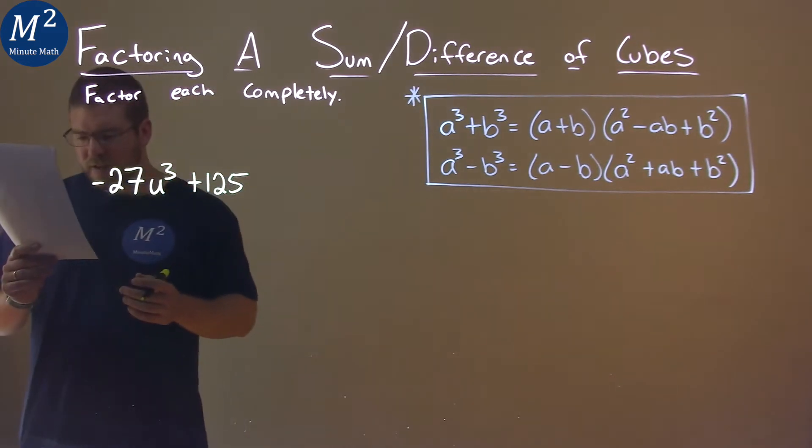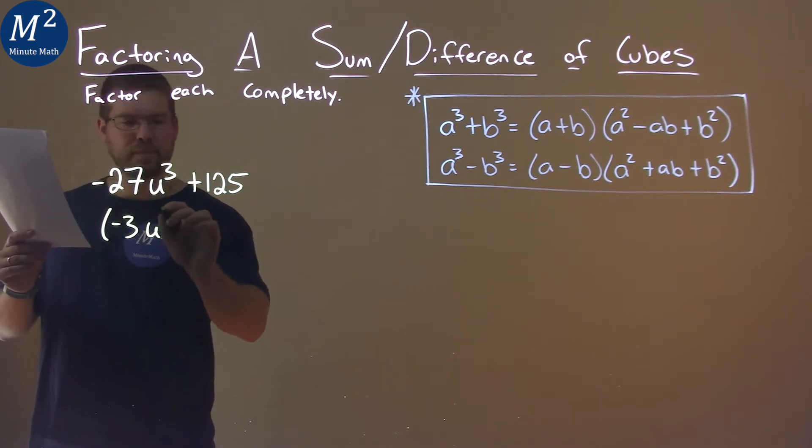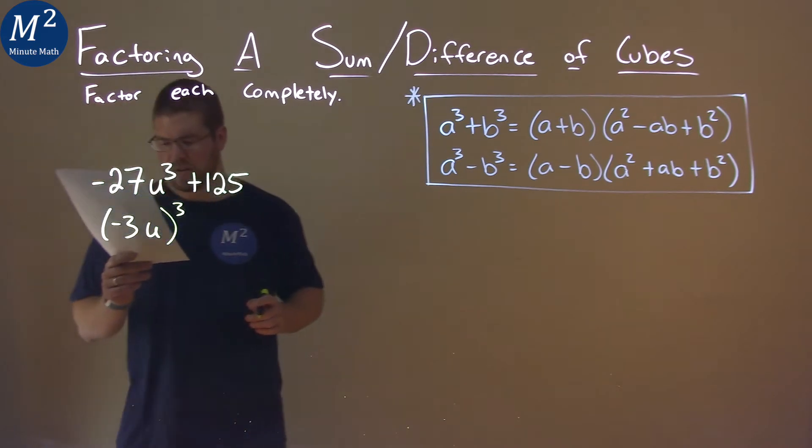Negative 27u cubed, well negative 3 cubed is negative 27, and then u cubed is u cubed. So if we have negative 3u all cubed, that's the same as negative 27u cubed.